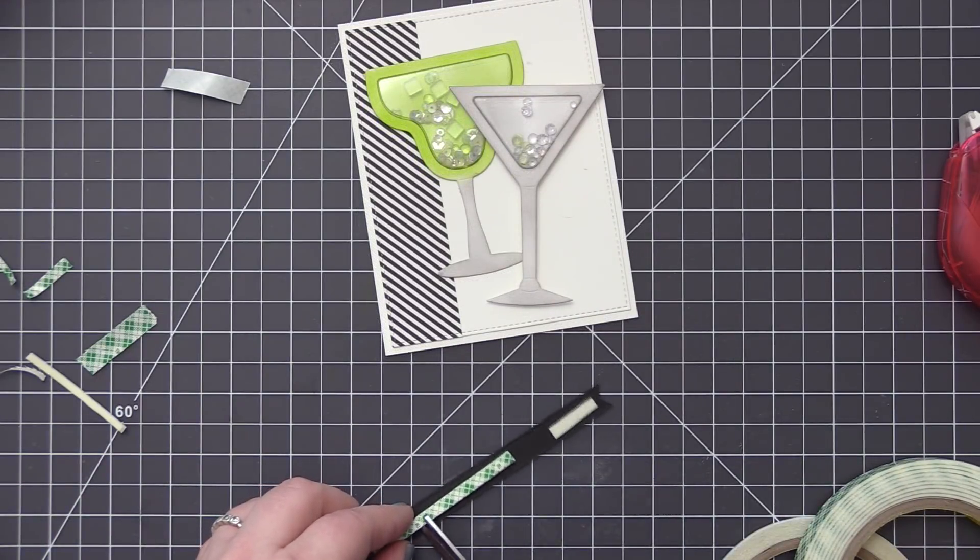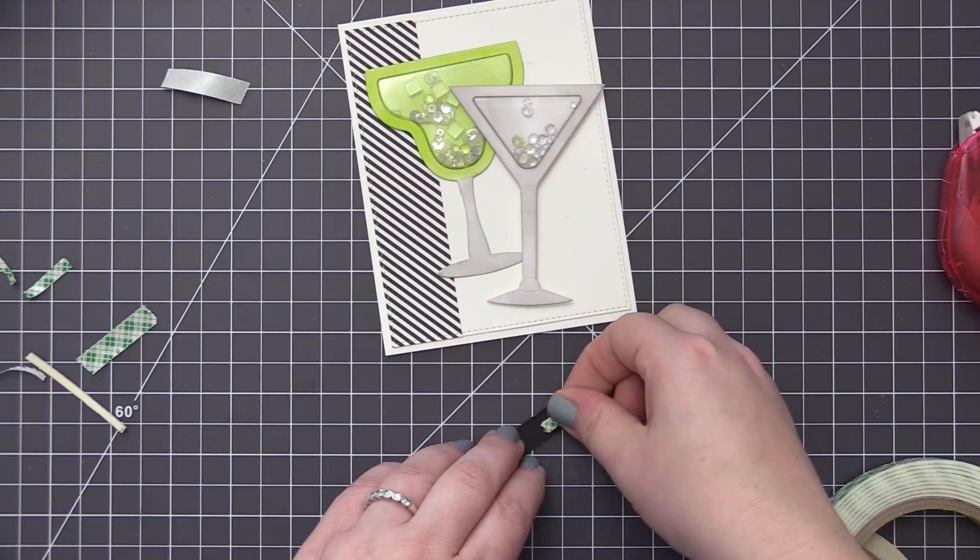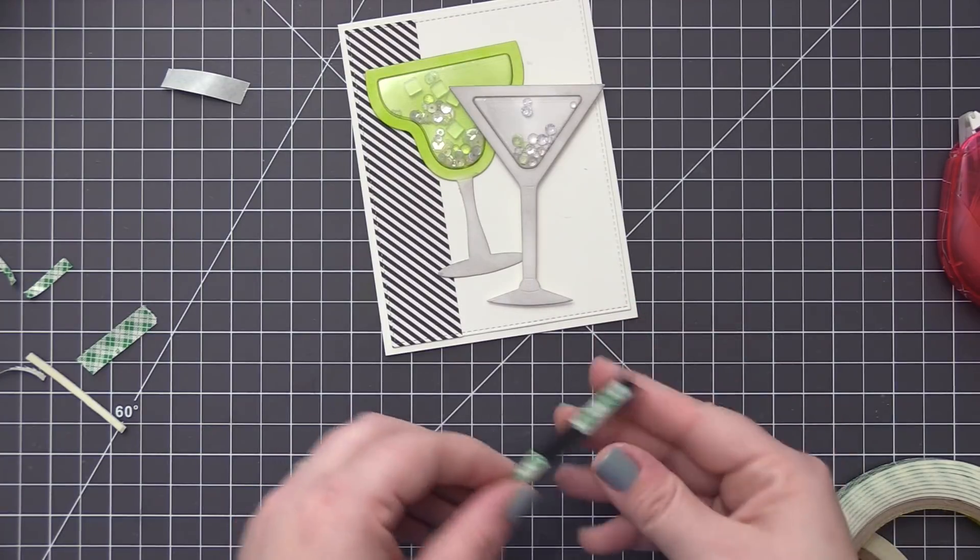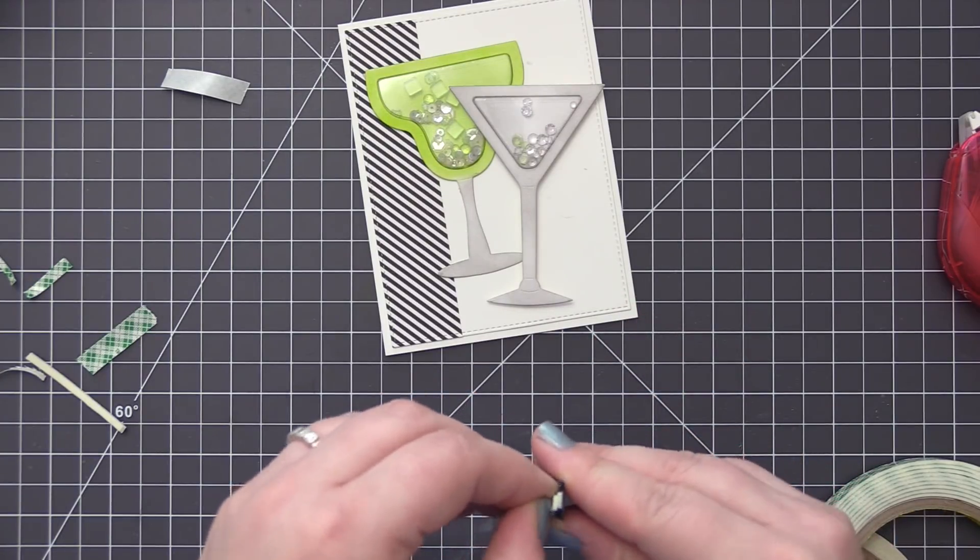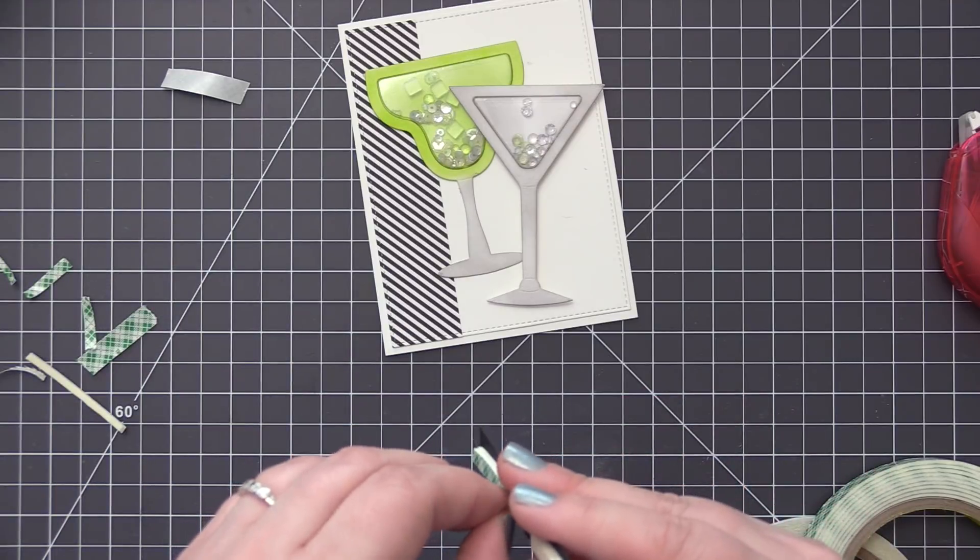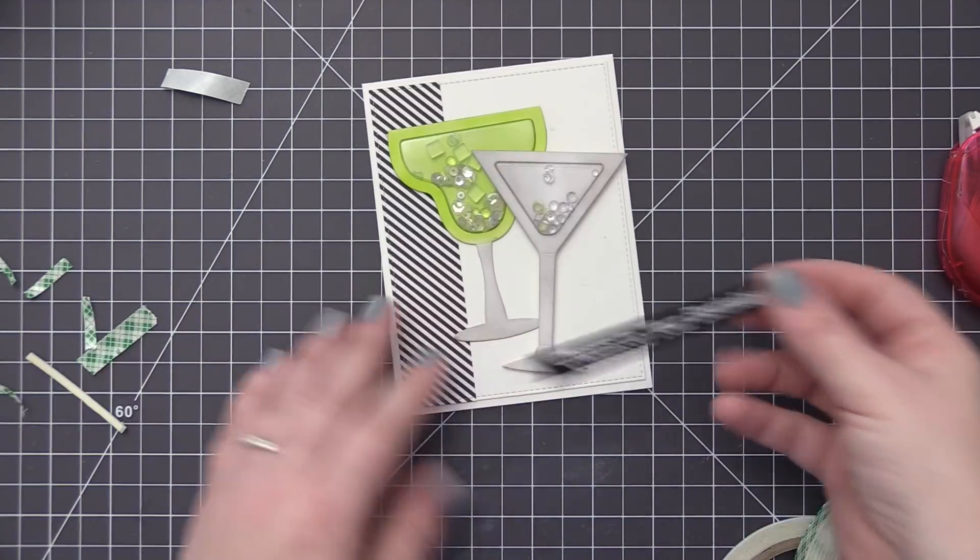For the sentiment strip I also added that same foam adhesive since we are going to be layering this over the martini glass which also has the foam adhesive. So I just made sure to leave an opening where the stem of the glass is going to go. And then I'm just going to layer this directly over top.